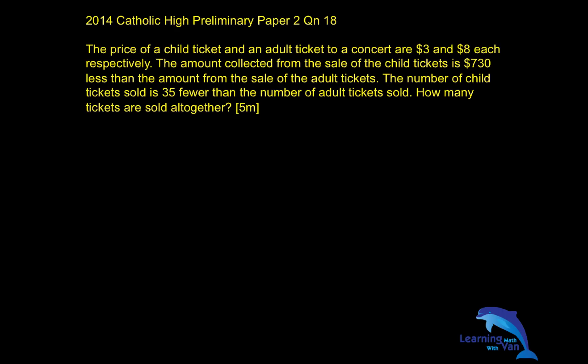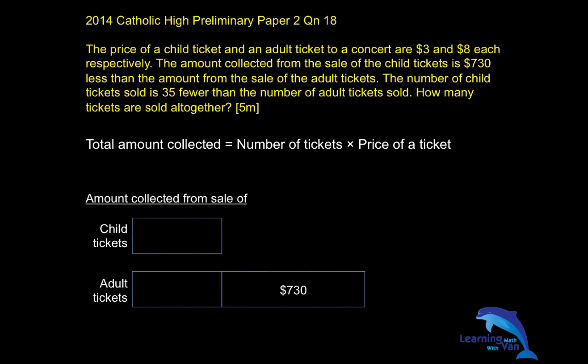I will need the knowledge of total value. In order to know the total amount collected, we need to understand that it is made up of two components, two variables — number of tickets multiplied by the price of a ticket. We know that a certain portion comes from child tickets and a certain amount from adult tickets, and the adults would have $730 more than that of the child tickets.